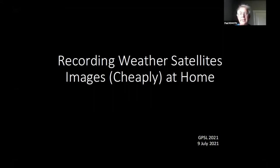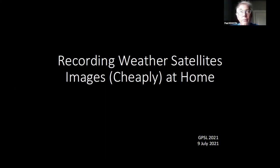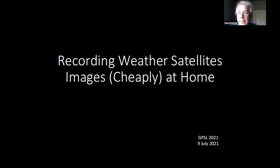This talk is specifically about recording low earth orbiting weather satellites. There are several — four of them — that pass over twice a day, about 12 hours apart from each other. Depending on your position and what orbital plane they're in, you can get one of them on two passes about 90 minutes apart.